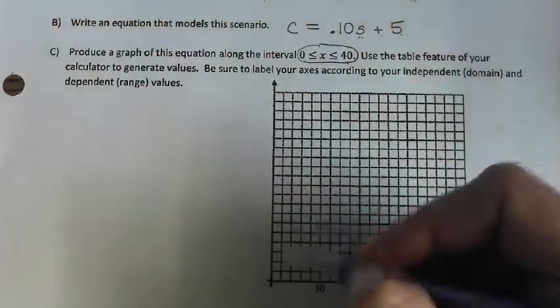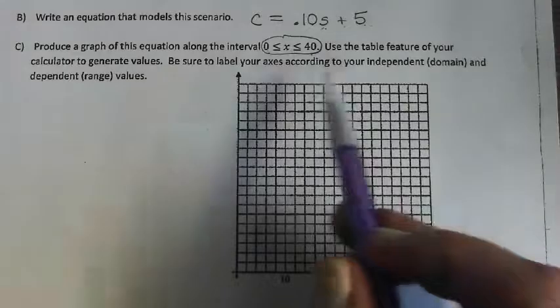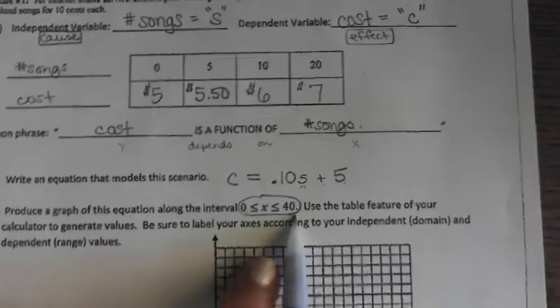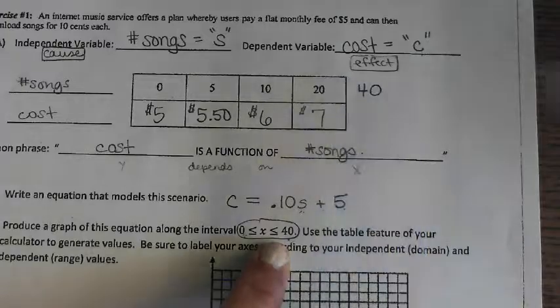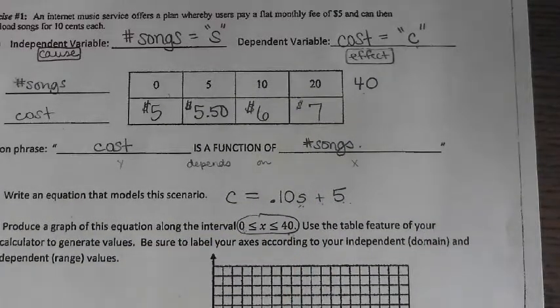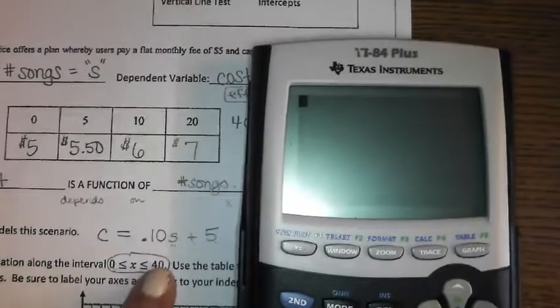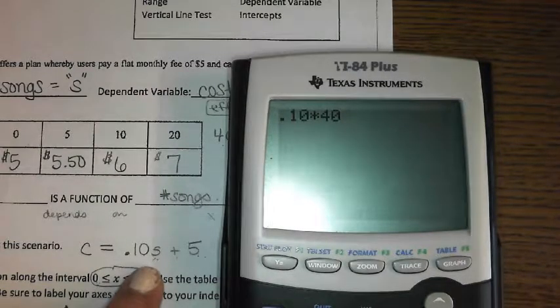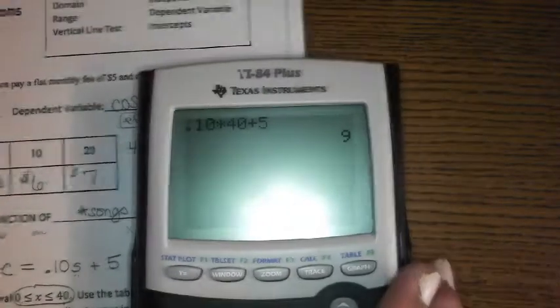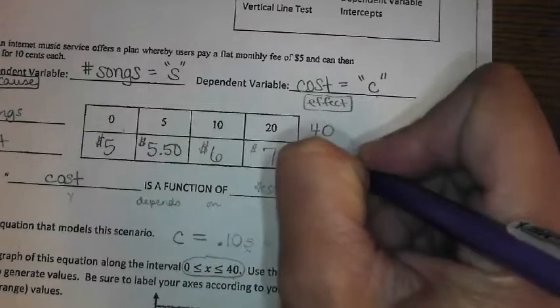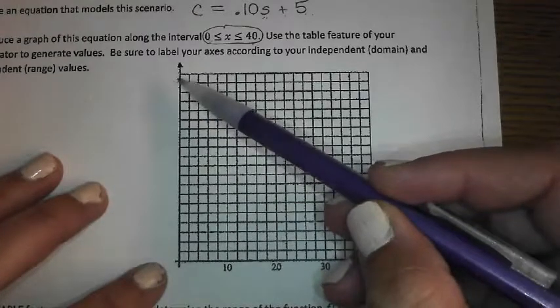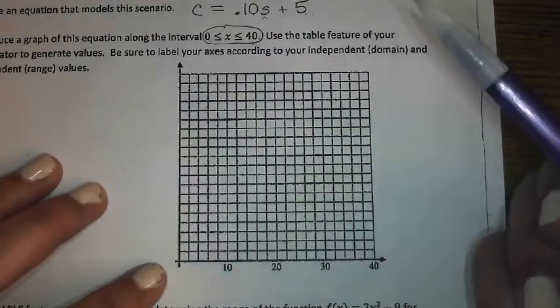We know this starts at $5, 0 songs, $5. But we want to scale this so it's going to fit the entire graph. Let's figure out what we would get for 40 songs. We would use your calculator, 0.10 times 40 songs plus the $5. That's going to be $9. So let's make sure we use this only up to where we need, only up to $9 or at most $10.